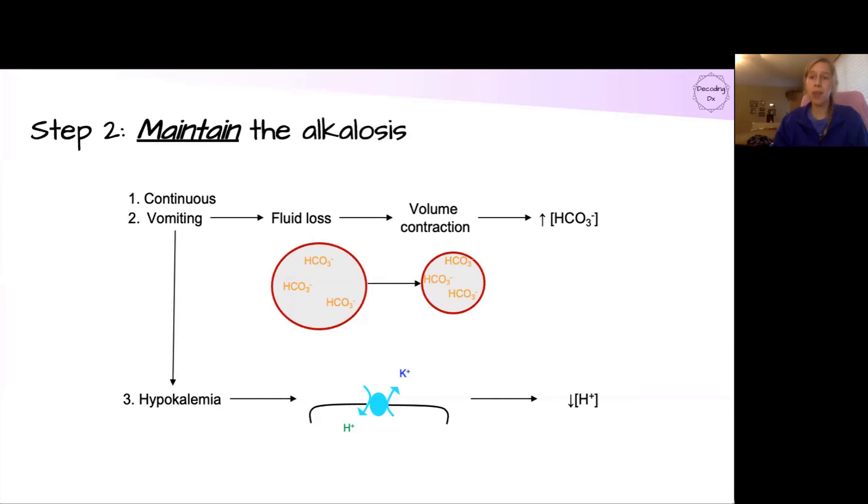Finally, vomiting also leads to hypokalemia because we lose some potassium out of the vomit as well. We already talked about this in part one of the series where hypokalemia will lead to a compensatory action that will further maintain the alkalosis because of a decreased concentration of hydrogen.